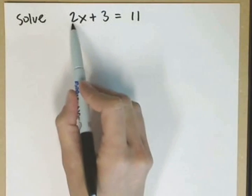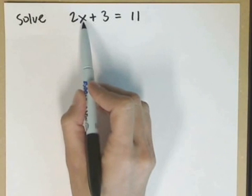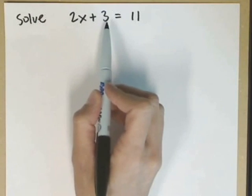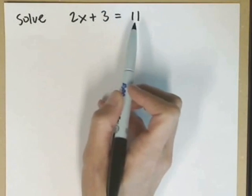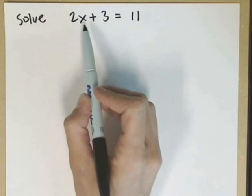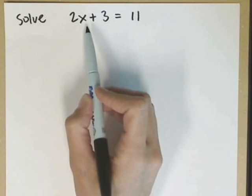So what we have here is 2 times some number, so we've got it multiplied, plus a 3, there's the addition, equals 11. Our goal is to find that number. You can run through and guess that one, so if you've guessed it, see if your answer matches our answer.